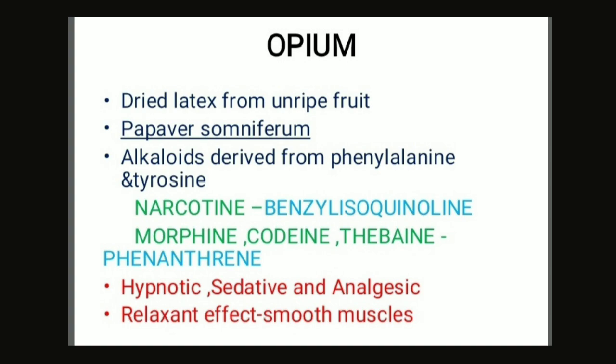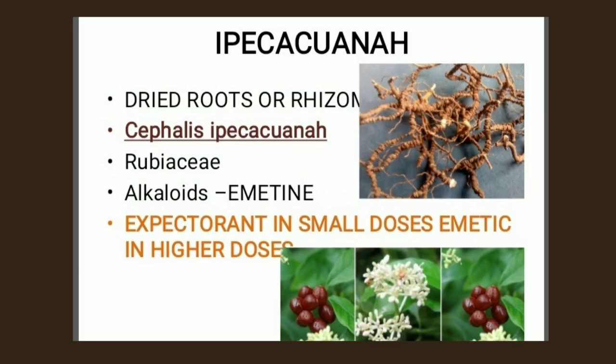The next crude drug is ipecacuanha. Ipecacuanha consists of dried roots of Cephaelis ipecacuanha. Its family is Rubiaceae. It contains isoquinoline alkaloids, namely emetine and cephaeline. It is used as an expectorant in small doses and as an emetic in higher doses.